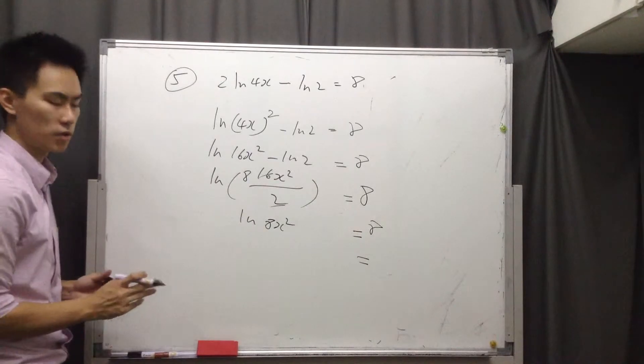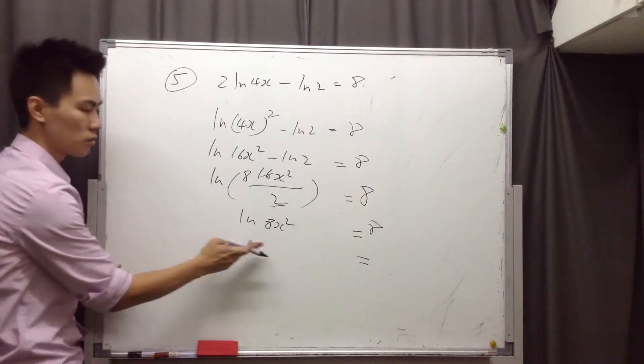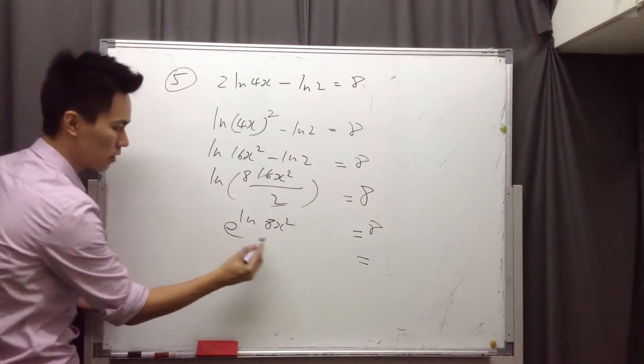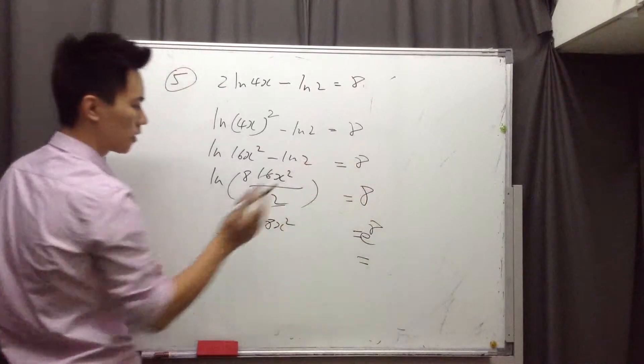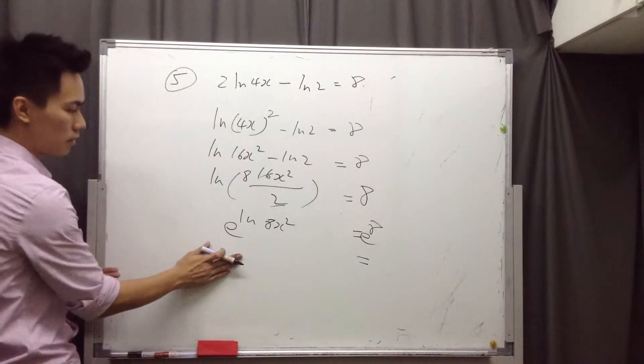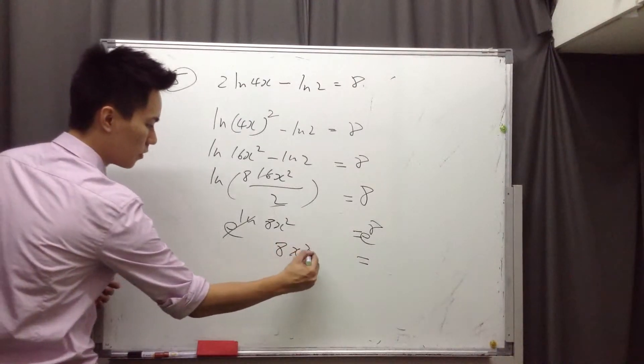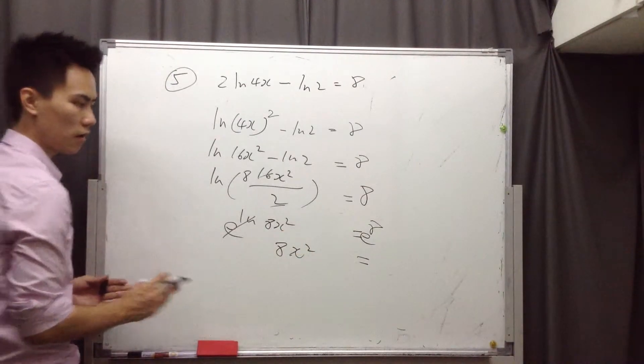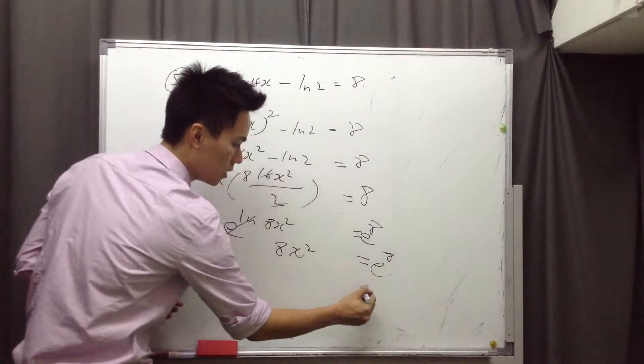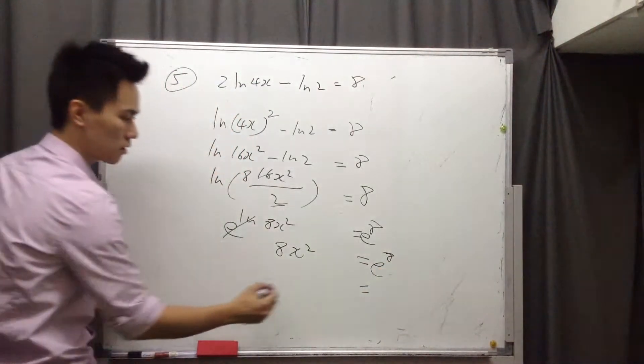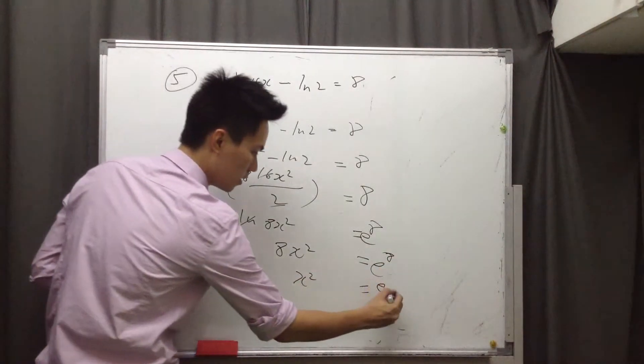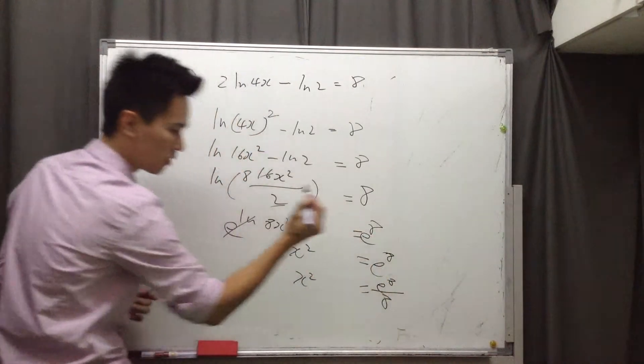So the next step is to eliminate the ln and to solve the x. So we add an e here, we add an e here. So here you can see we cross this out, and the left hand side we will have 8x squared equals e to the power 8. So x squared would be e to the power 8 over 8.